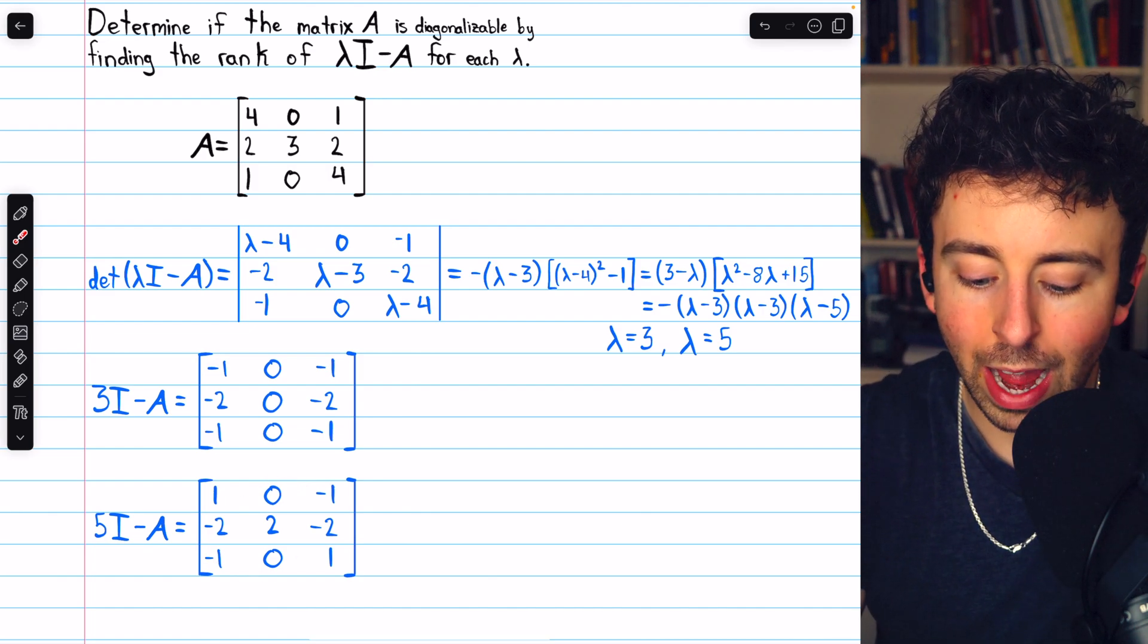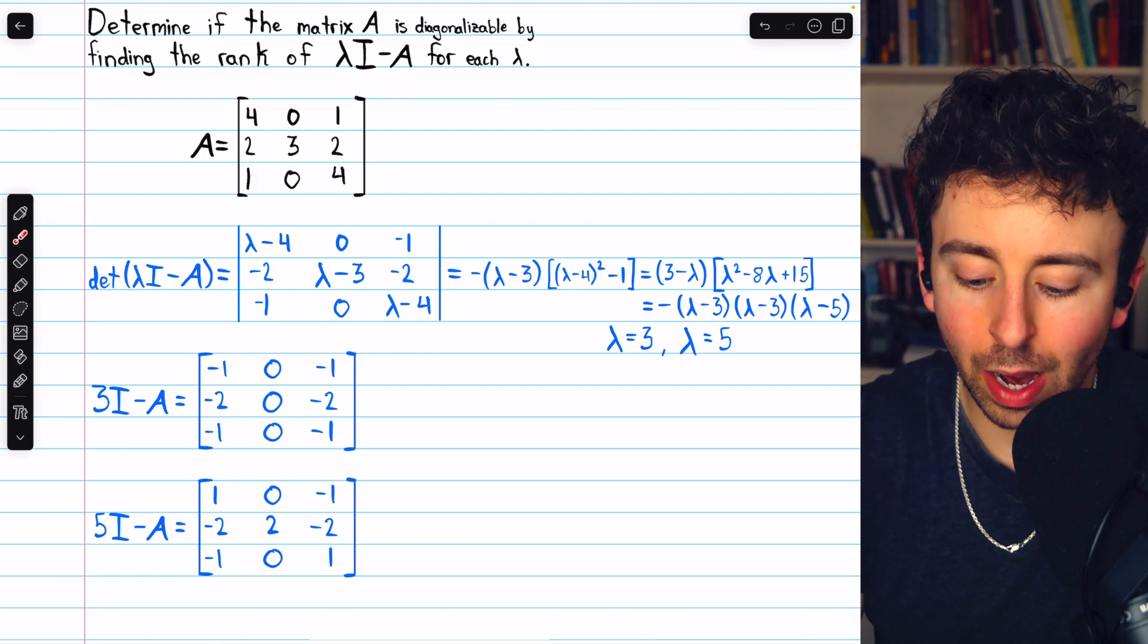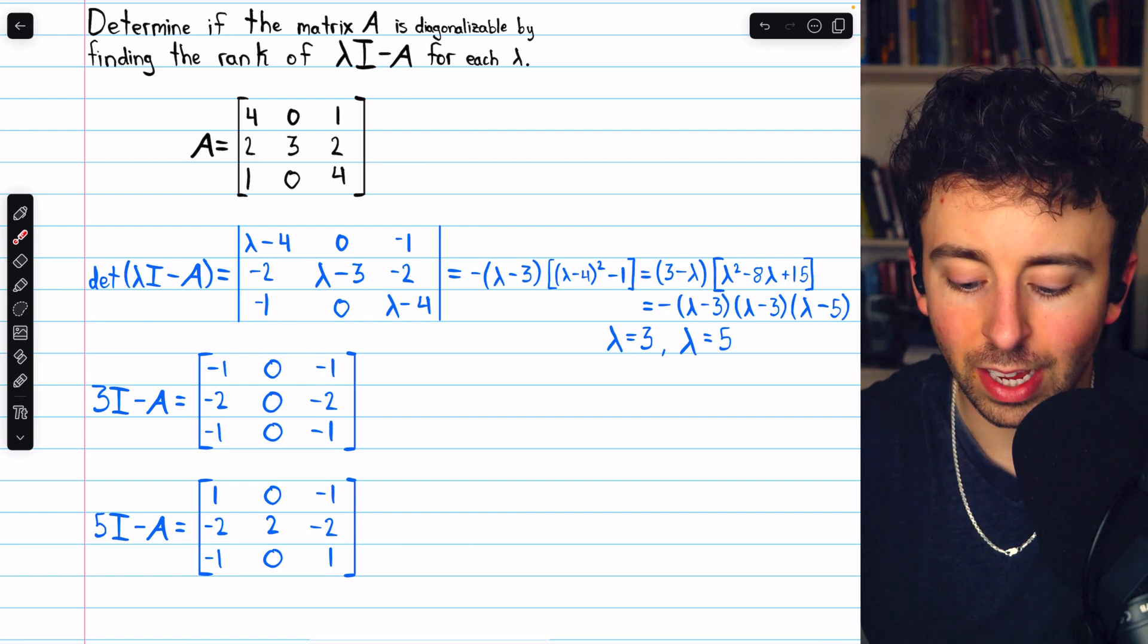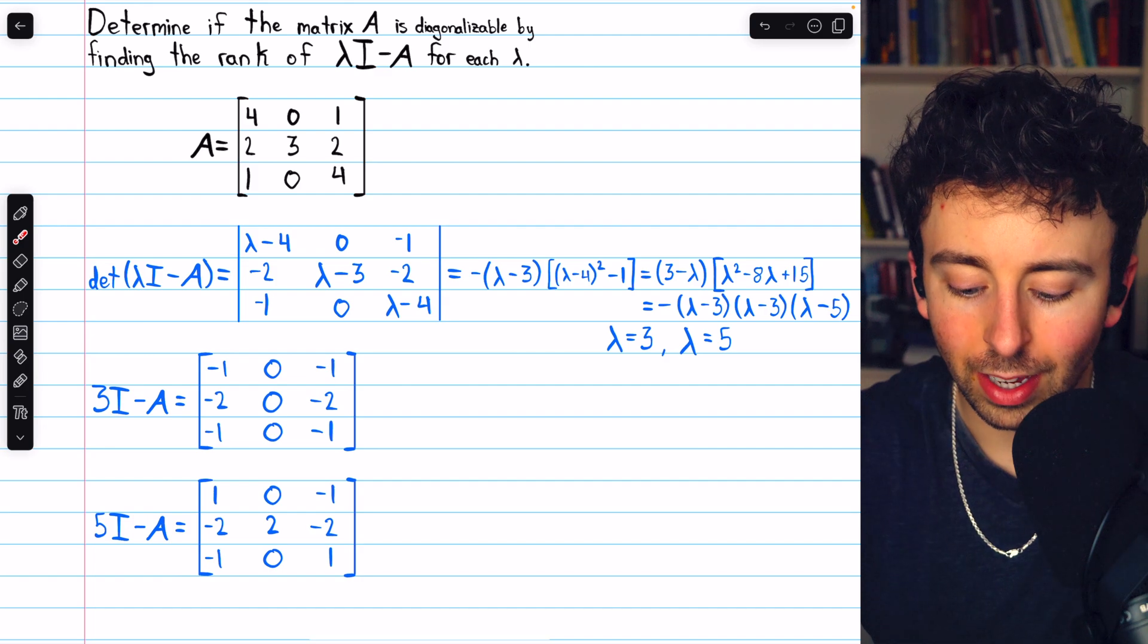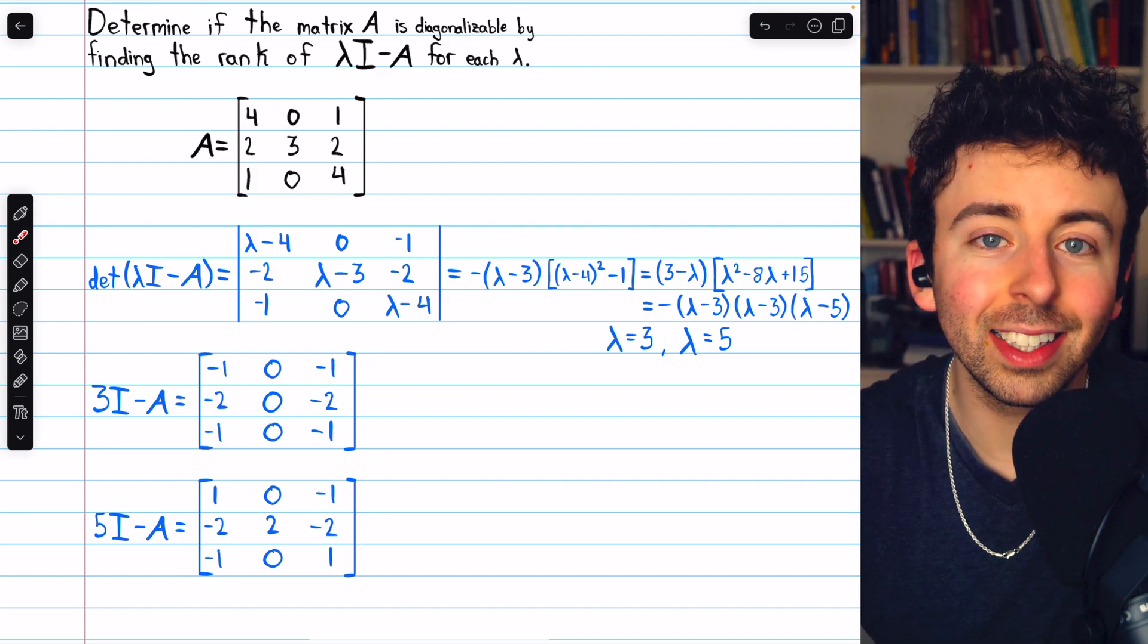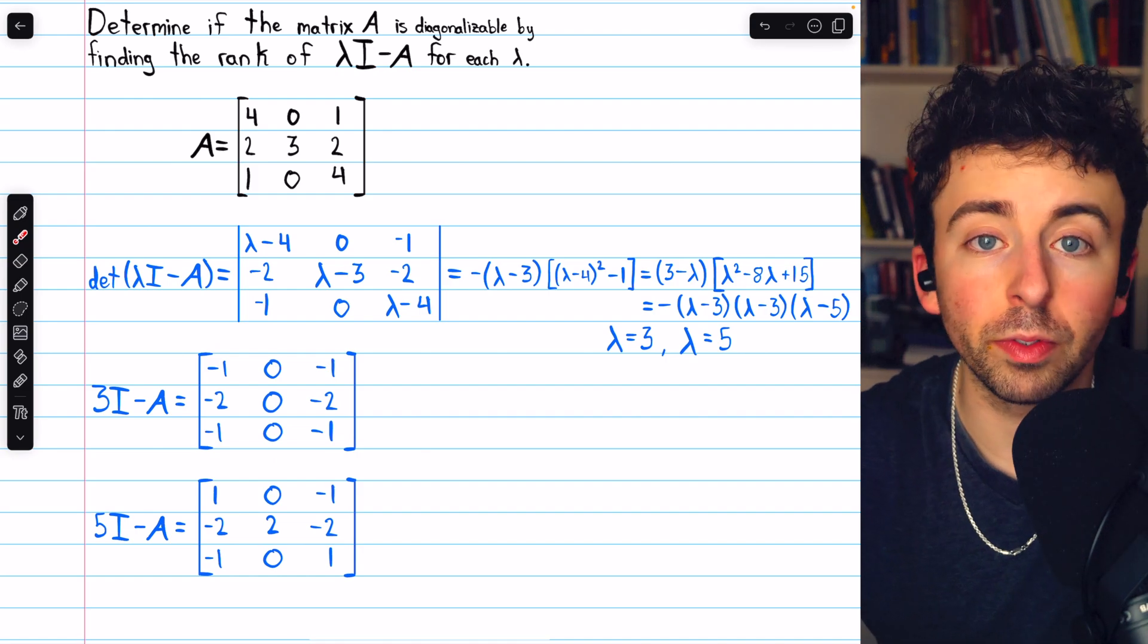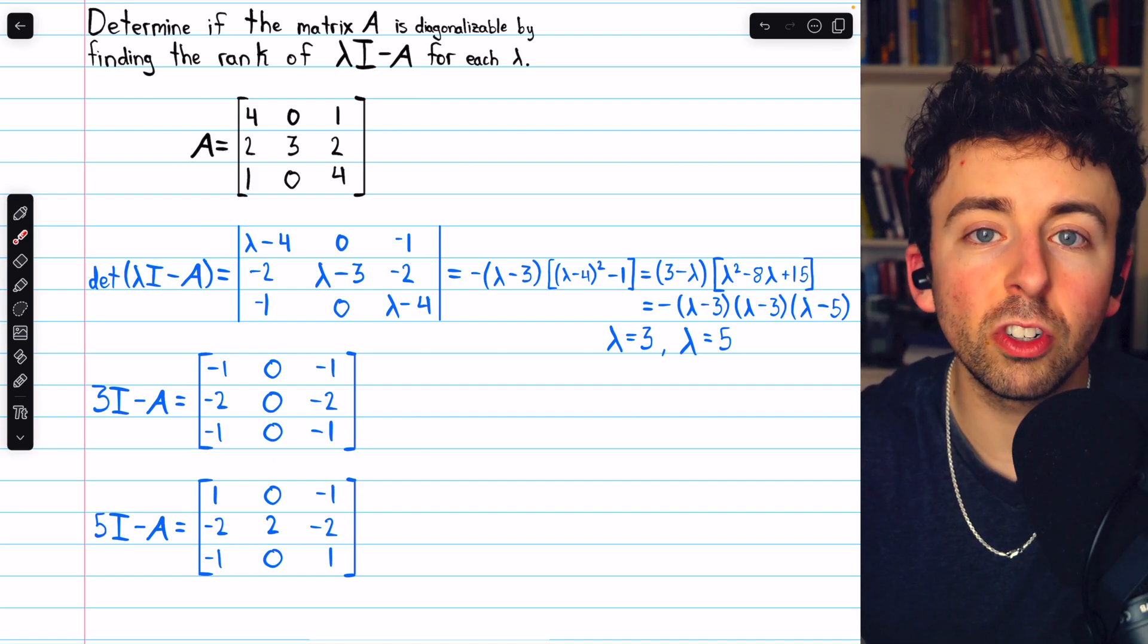Now, what are the ranks of these two matrices? Well, the rank of this first one we can easily determine by looking at the columns. This is a column of zeros, and these two columns are exactly the same. So the rank of this matrix is the number of linearly independent columns, which is just 1.